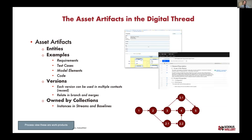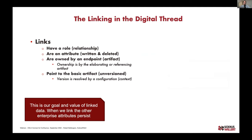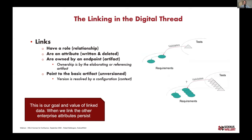Assets like requirements and test cases have versions, have history, and can be reused in multiple different places. As we navigate to and from those artifacts, they'll all have a version context. This is the big challenge when we talk about synchronization and why it's hard — when linking between artifacts, we always need to link to a particular version. Which requirement does a test validate? Not just requirement ID 98, but which version of it. That's the context of our enterprise configuration, and that's something Martin talked very well about — the need to have this enterprise configuration concept.